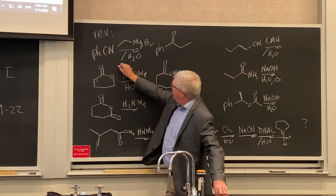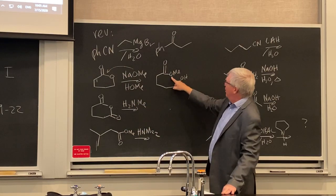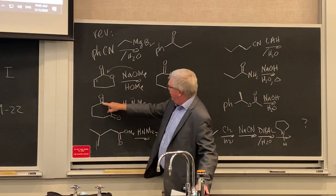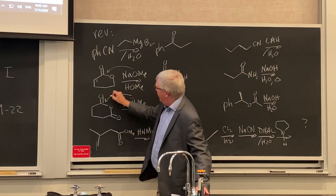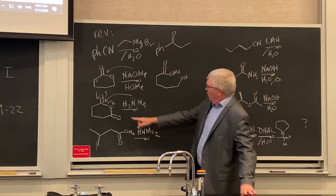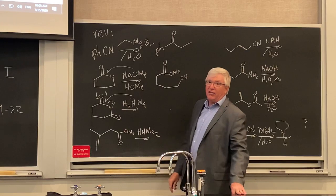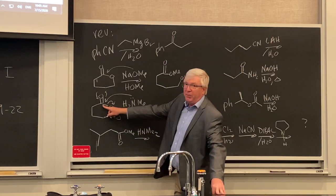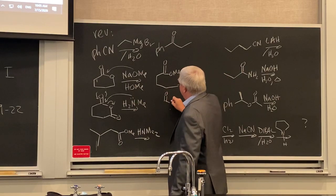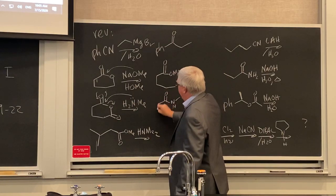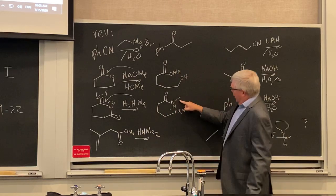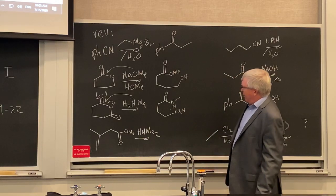For the transesterification, you're in methanol, so you convert and then protonate. With the cyclic anhydride, one of the carboxylates is the leaving group and the other is the electrophile — they're not both electrophiles. You get the amide and the free carboxylic acid. Break that bond: carboxylic acid and amide.